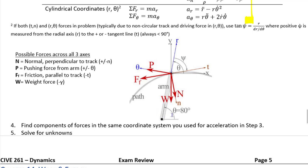One last thing to highlight: the theta axis, probably the trickiest of all these axes to draw, is always in the direction of an increasing theta angle. The theta angle is measured from a horizontal reference in the positive right-hand rule direction, so the theta axis points in the direction of increasing theta. Once you get all of your axes set and solve for your accelerations, break your forces into components and solve for your unknowns.